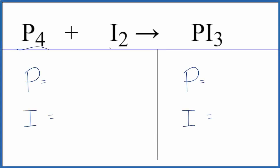Let's balance the equation P4 plus I2 yields PI3. This is solid tetraphosphorus plus iodine gas, and this is solid phosphorous triiodide.